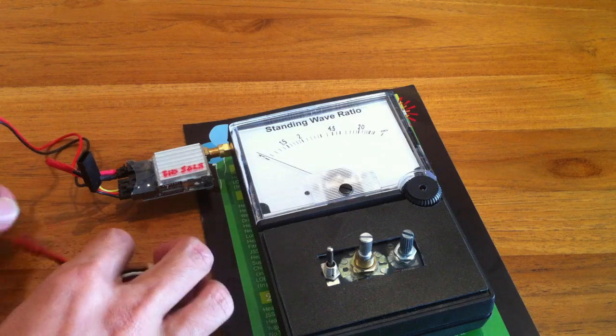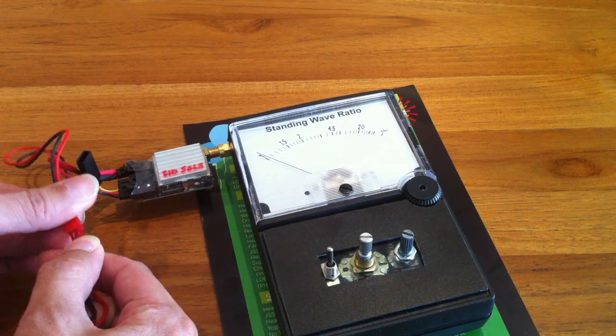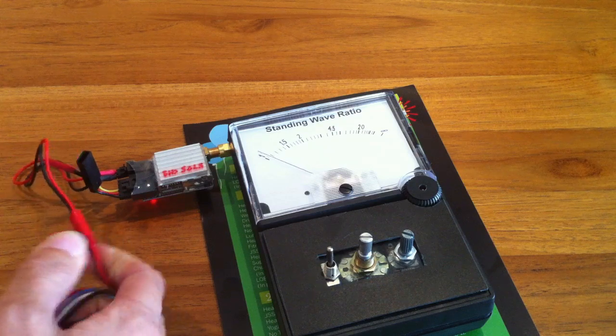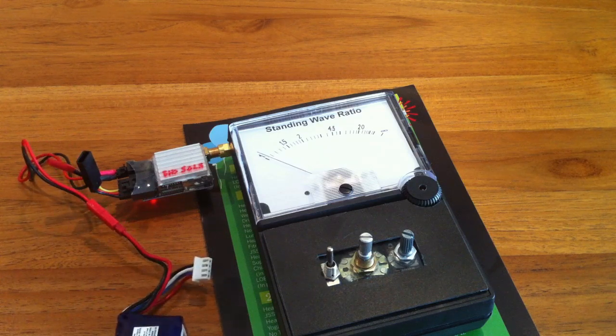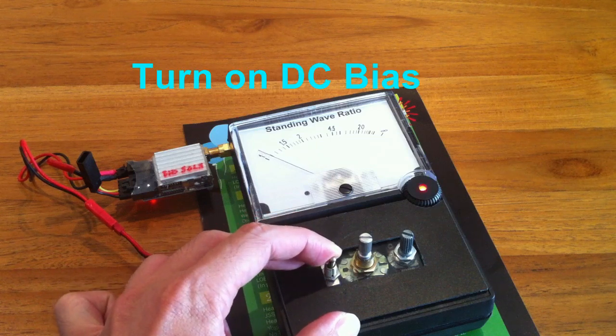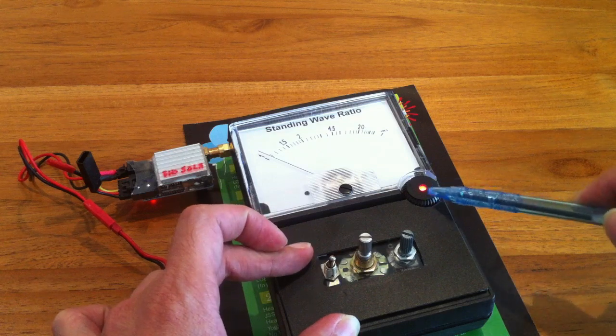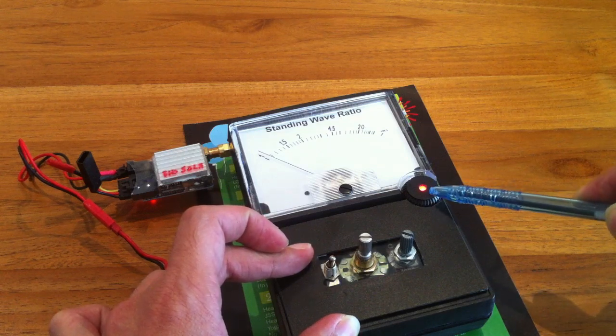Once that is done, we can power on the transmitter, and then we can turn on the DC bias. The DC bias is turned on now, as you can see from the red LED light.